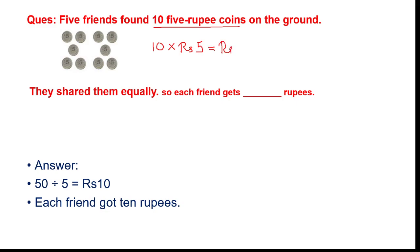All five friends together have rupees fifty. Total number of friends is five, and five friends got rupees fifty in total. So for one friend, what you will do is divide fifty by five, and you will get rupees ten as the answer. So each friend got ten rupees.